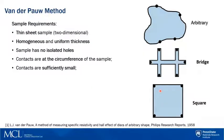The Van Der Pauw Method was first presented by L.J. Van Der Pauw in 1958, aiming for the resistivity and Hall coefficient measurement of flat thin sheet samples with arbitrary shape.